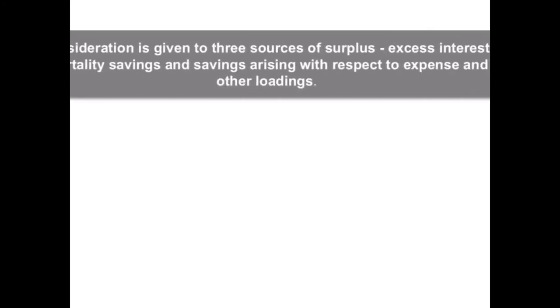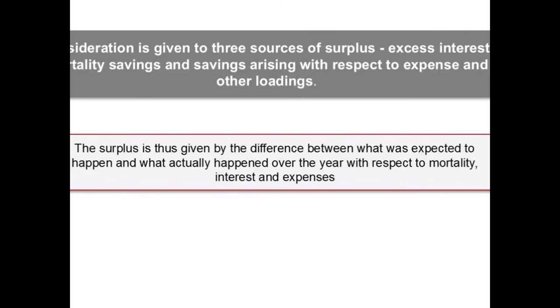Let us now understand the contribution method. Under this method, consideration is given to three sources of surplus: excess interest, mortality savings, and savings arising with respect to expense and other loadings. The surplus is thus given by the difference between what was expected to happen and what actually happened over the year with respect to mortality, interest, and expenses.